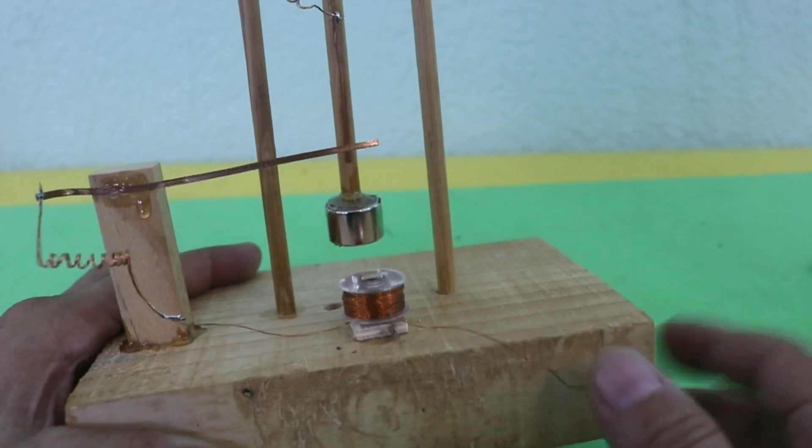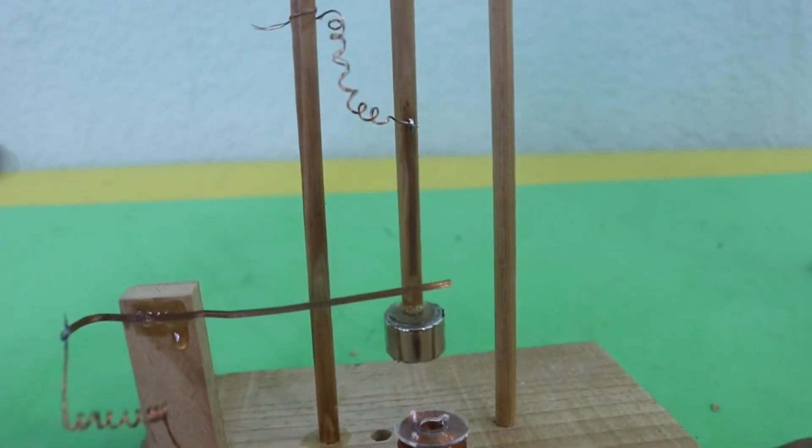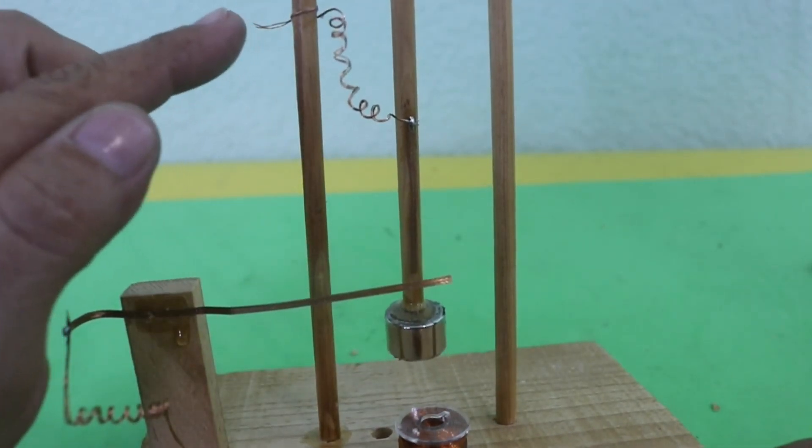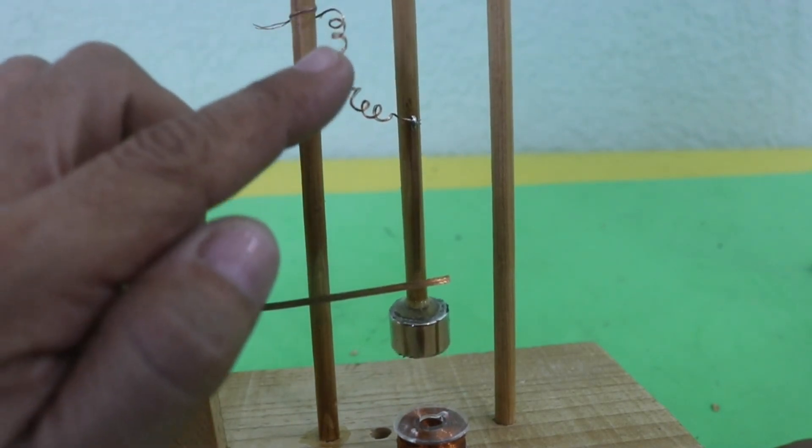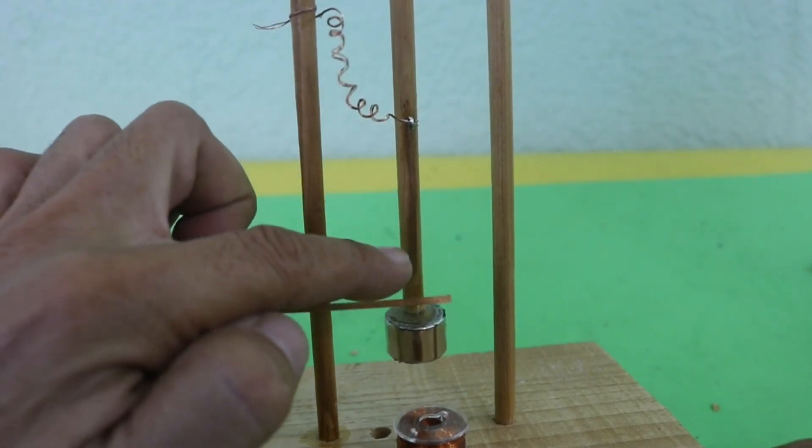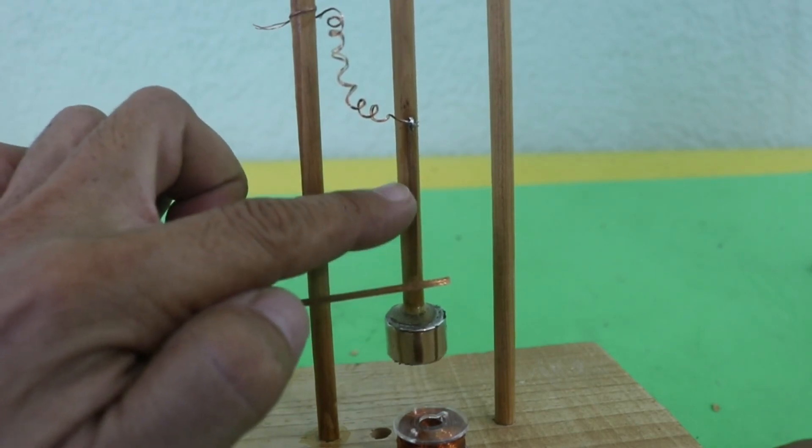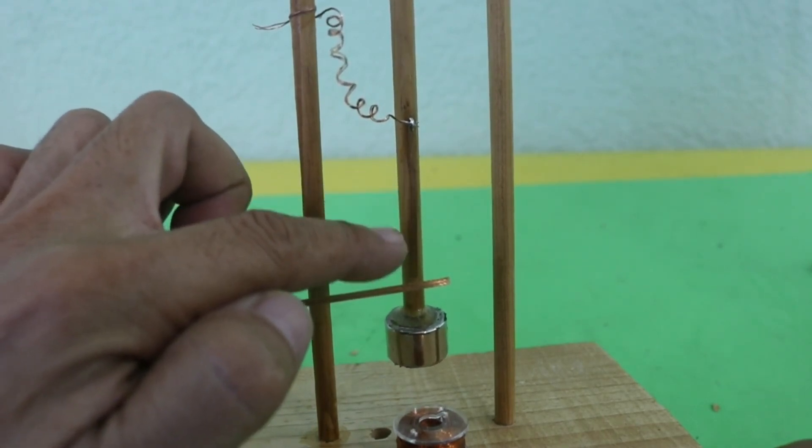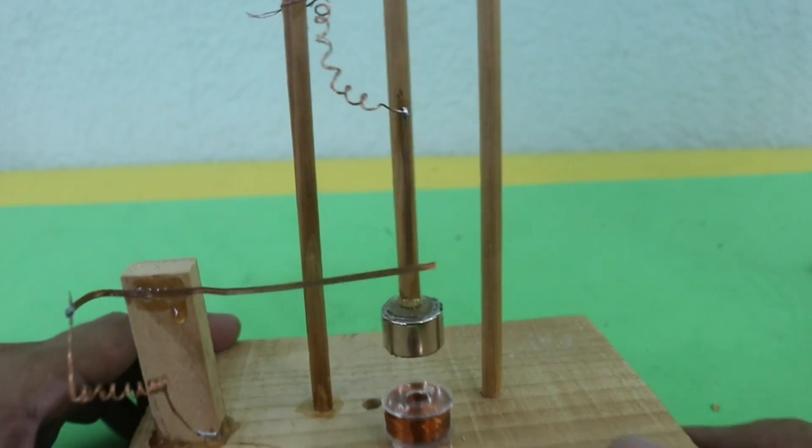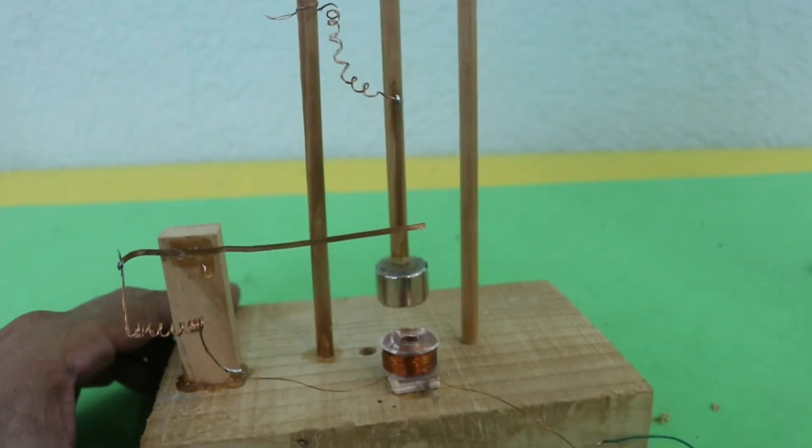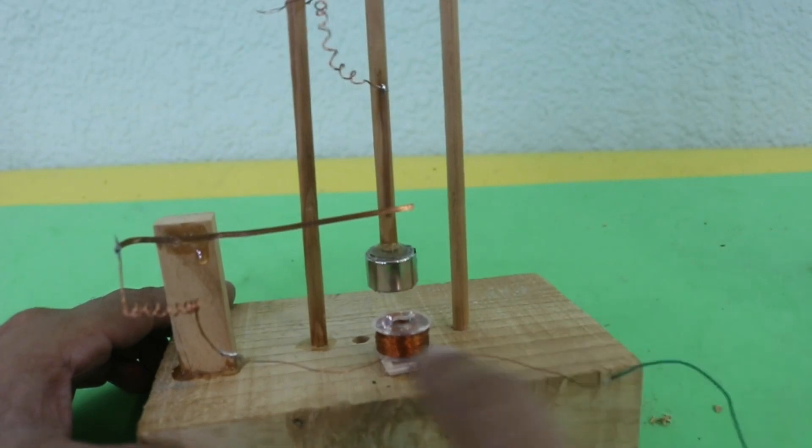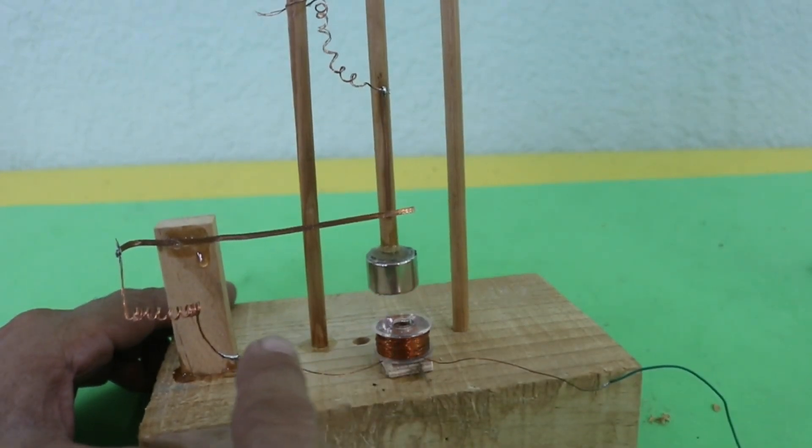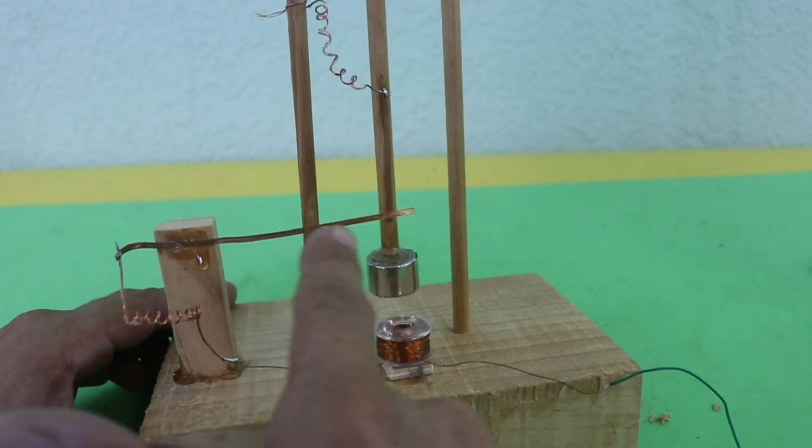Now, the circuit works in this way. We have this wire here that is connected to the positive of the battery and comes here. We have a wire in the rod of the pendulum and the coil, one side of the coil is connected to the negative and the other side of the coil comes here to this other wire.